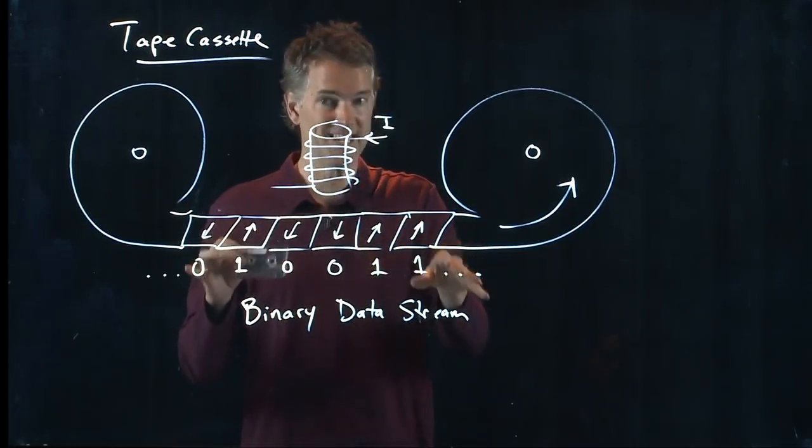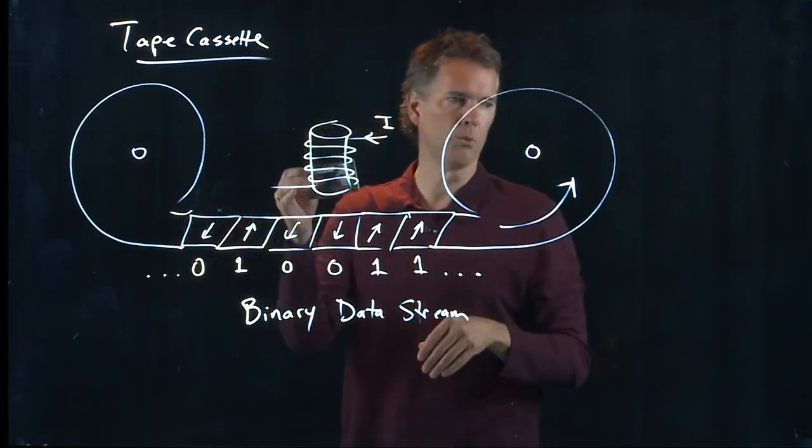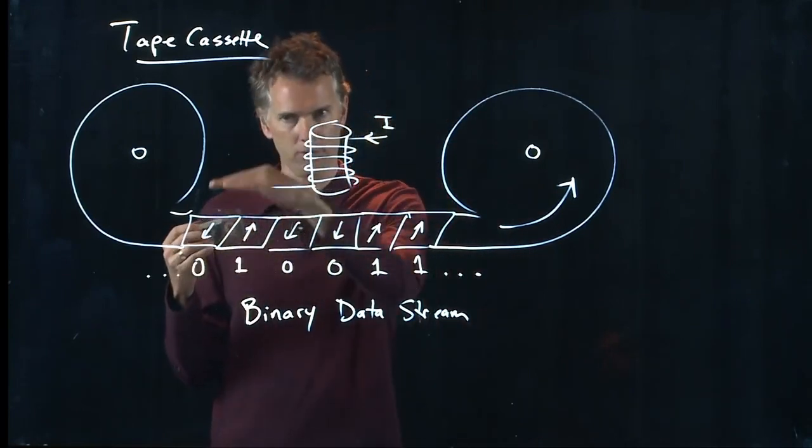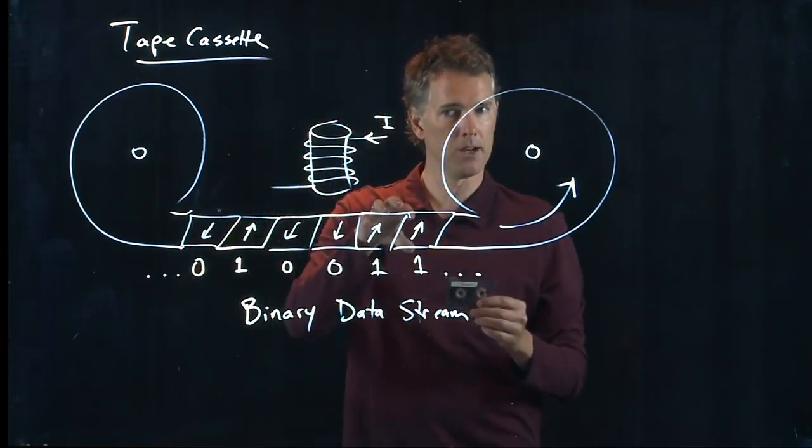Now I showed you a digital system here. The old systems were analog. All right. So it wasn't just zeros and ones. It was different levels. And as those levels went past, you can write information on it.